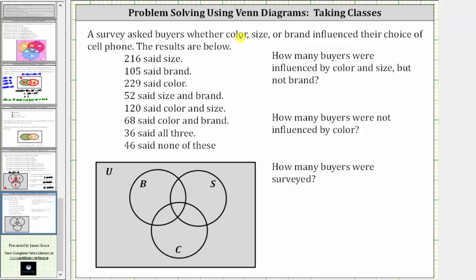A survey asked buyers whether color, size, or brand influenced their choice of cell phone. The results are below: 216 said size, 105 said brand, 229 said color, 52 said size and brand, 120 said color and size, 68 said color and brand, 36 said all three, and 46 said none of these.